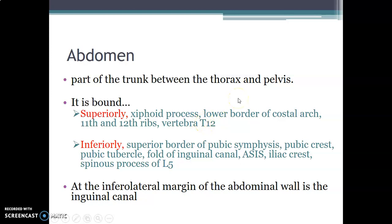So the superior boundaries are the xiphoid process, then as you go laterally, the lower costal arc, then the 11th to 12th ribs, and finally posteriorly, the 12th thoracic vertebra. Inferiorly, the boundaries are the superior border of the pubic symphysis, the pubic crest, pubic tubercle, the fold of the inguinal canal, anterior superior iliac spine, iliac crest, and the spinous processes of the fifth lumbar vertebra.